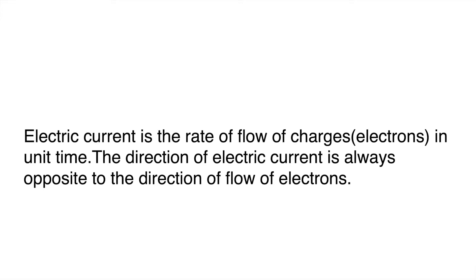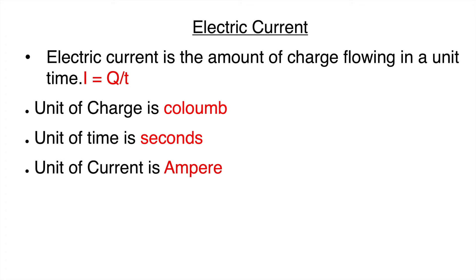For a detailed explanation of the direction of current and the direction of flow of electrons, you can see the link in the description box. We can also define electric current as the amount of charge flowing in a unit time. By formula: I = Q/T, where Q is the charge in coulombs and T is the time in seconds. The SI unit of current is ampere.